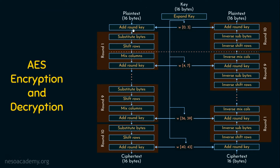The output of the initial transformation is given to round 1, where there are 4 transformations: substitute bytes, shift rows, mix columns, and add round key. These 4 transformations happen in round 1. The transformations are sub-bytes, shift rows, mix columns, and add round key. I will explain these various transformations in the next presentation.